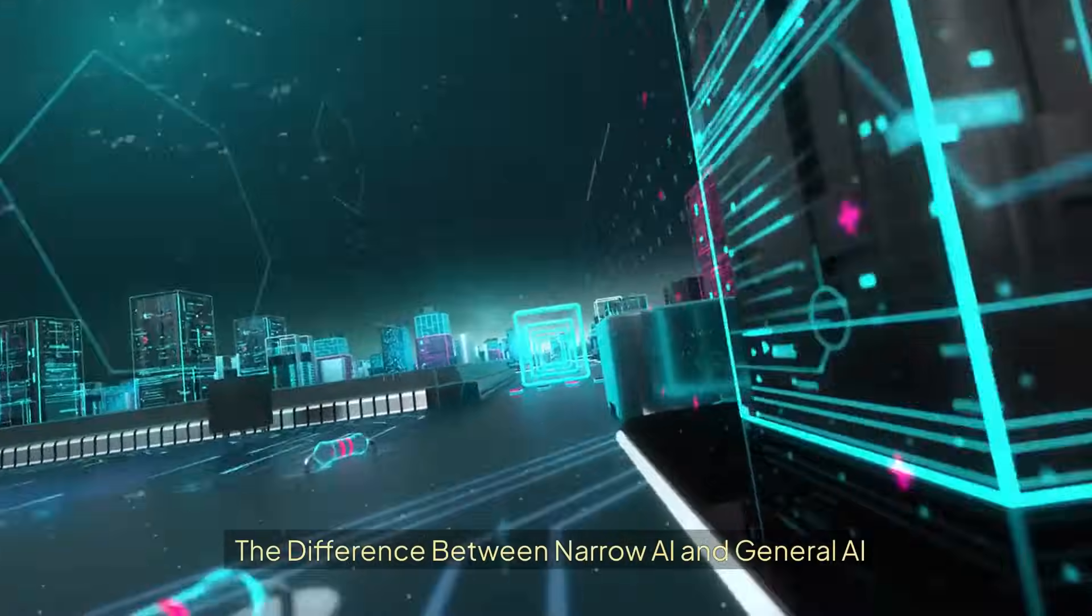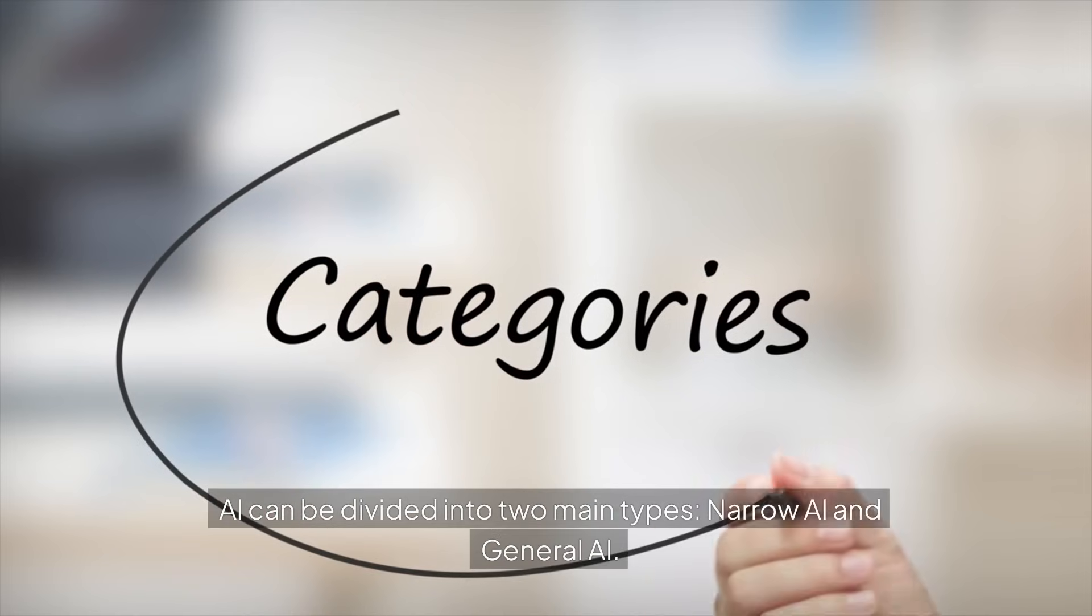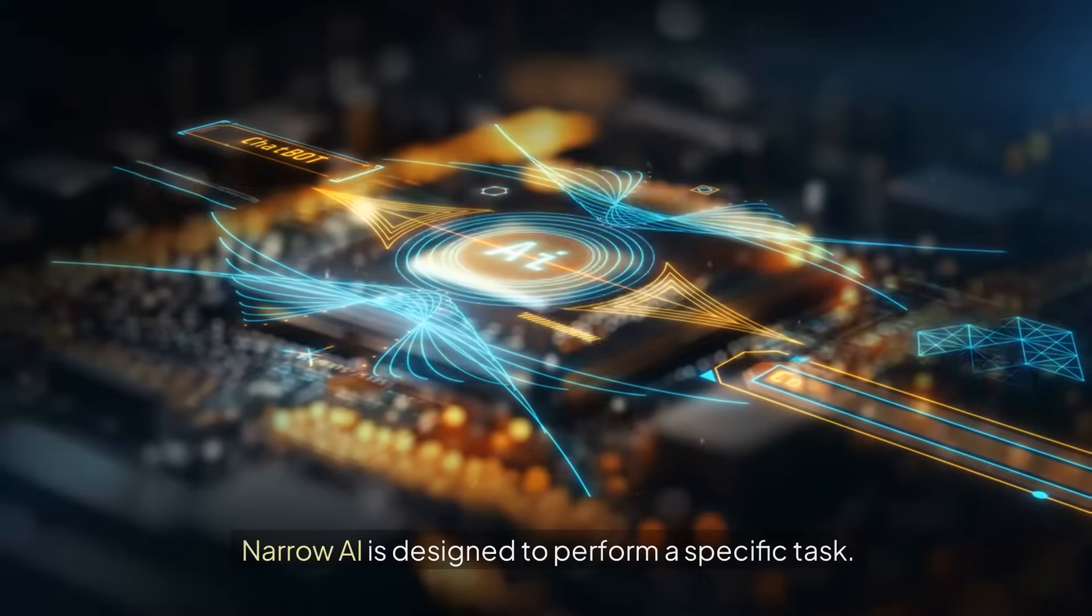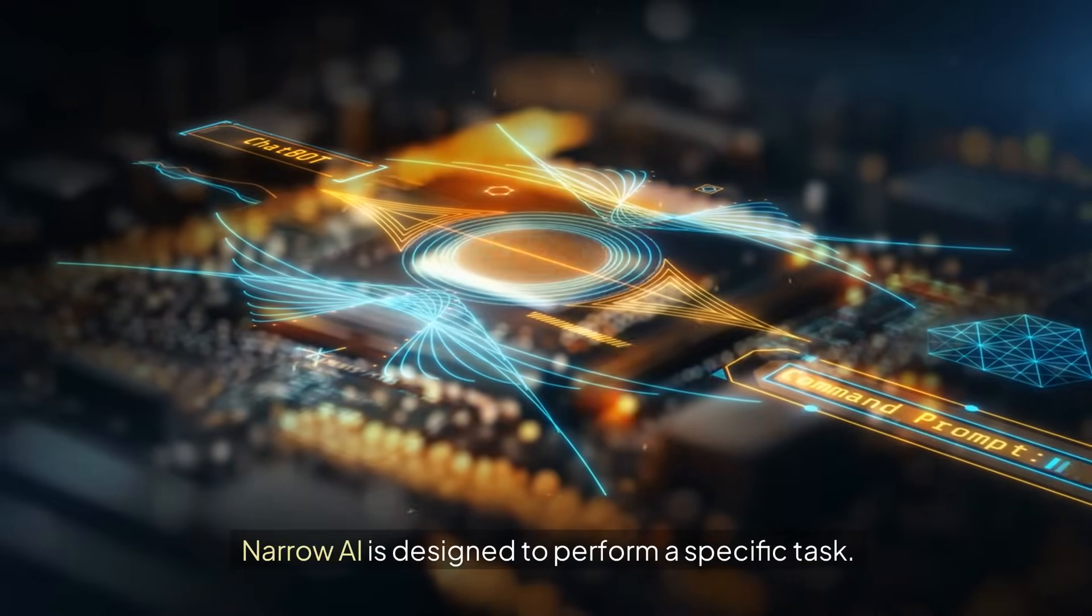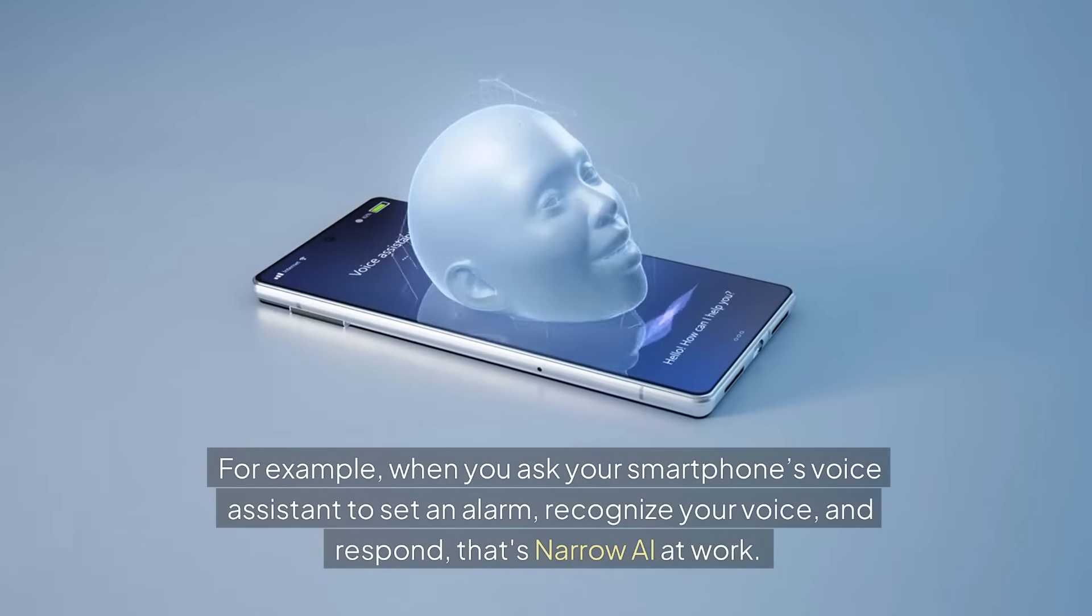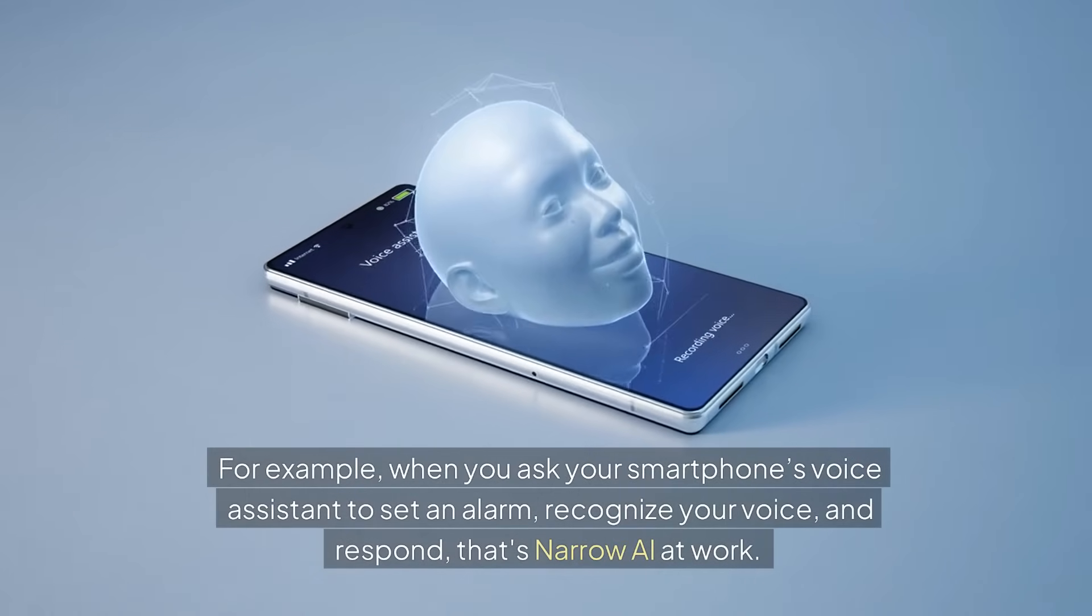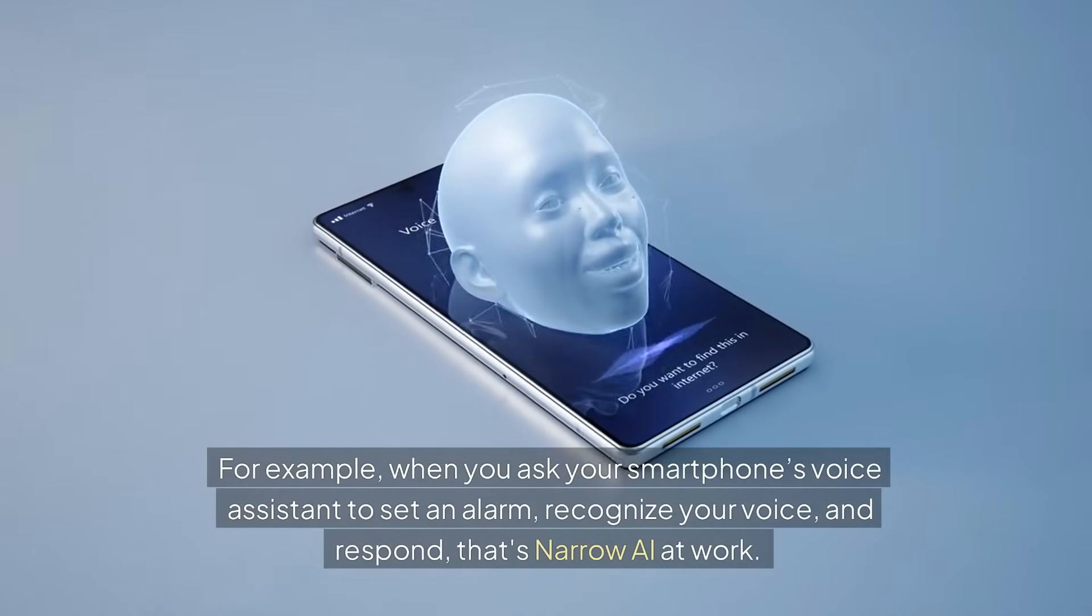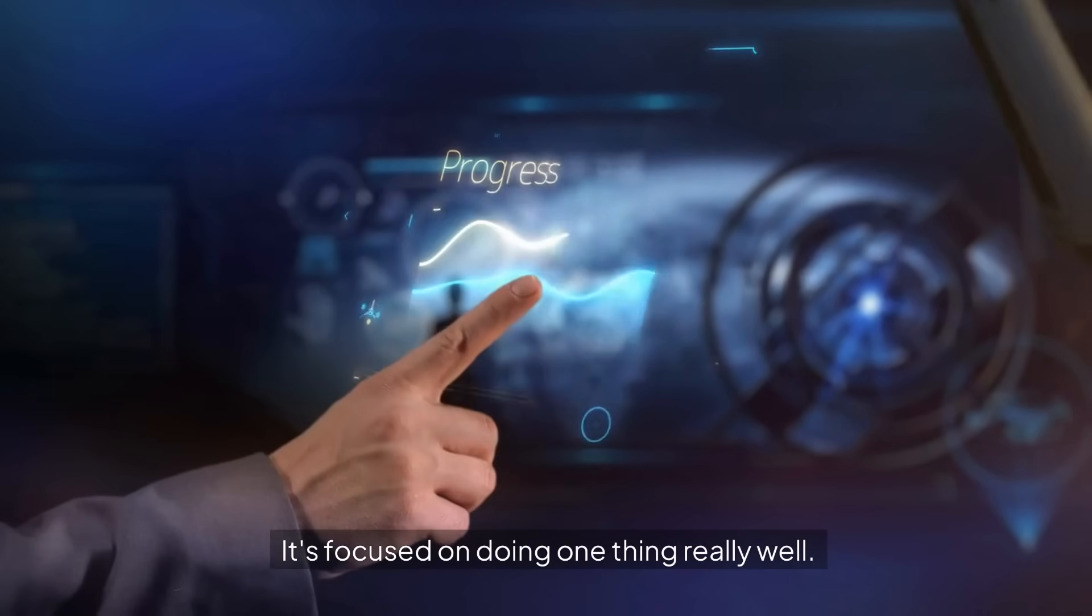The difference between narrow AI and general AI: AI can be divided into two main types, narrow AI and general AI. Narrow AI is designed to perform a specific task. For example, when you ask your smartphone's voice assistant to set an alarm, recognize your voice, and respond, that's narrow AI at work. It's focused on doing one thing really well, but it can't do anything outside of that specific task.